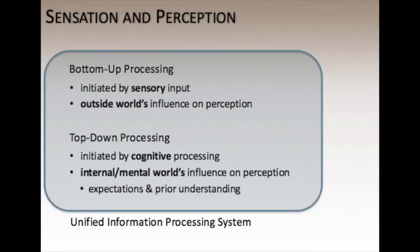There are two ways we process information. The first is called bottom-up processing, which occurs when information from the external environment is registered and sent up to the brain for interpretation. This type of processing occurs with first-time information, meaning information that a person is not very familiar with.